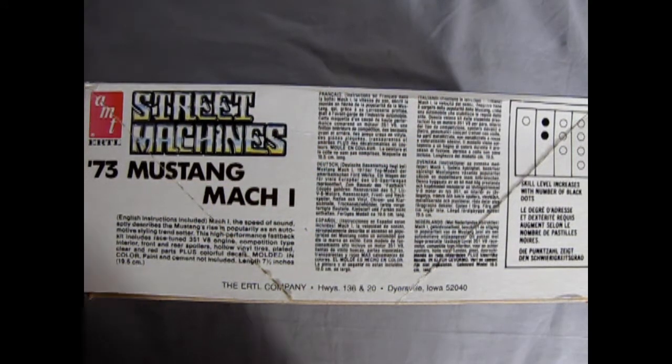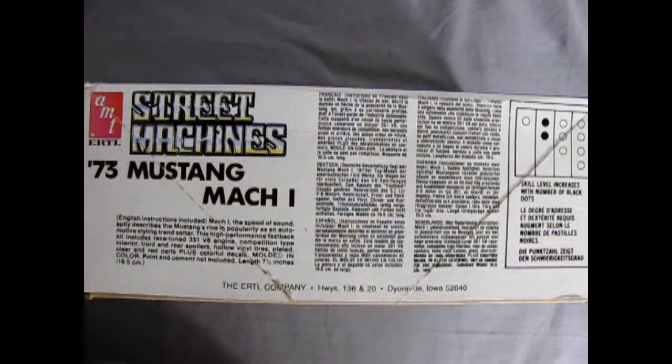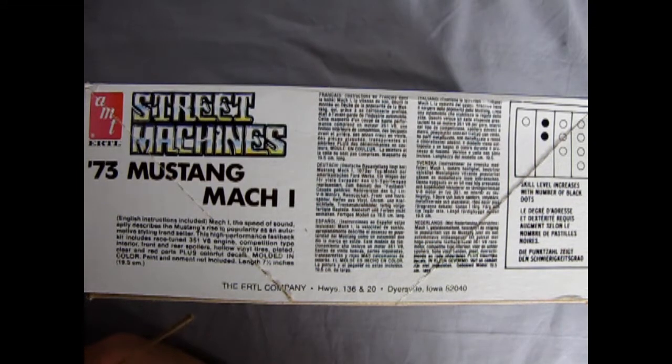On the opposite side of the box we see this kit is a skill level 2. It has English instructions included. Mach 1, the speed of sound, aptly describes the Mustang's rise in popularity as an automotive styling trendsetter. This high-performance fastback kit includes race tune 351 V8 engine, competition type interior, front and rear spoilers, hollow vinyl tires, plated clear and red parts, plus colorful decals. Molded in color, paint and cement not included. Length is 7.5 inches or 19.5 centimeters.